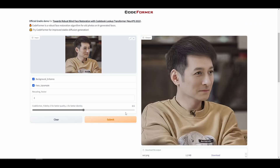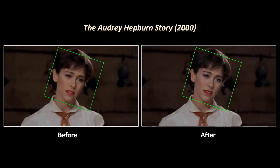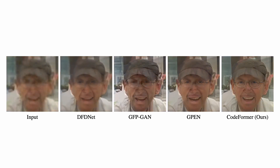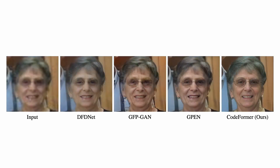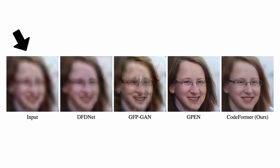And that is where CodeFormer comes in. Created by the folks at SLAB, Nanyang Technology University, this is a free online AI tool that allows creators to restore human faces in an image or video footage with high-quality details. Unlike other methods, blind face restoration is a highly ill-posed problem that often requires auxiliary guidance to improve the mapping from degraded inputs to desired outputs. This is a transformer-based prediction network which models global composition and context of low-quality faces for code prediction, enabling the discovery of natural faces that closely approximate the target faces even when the input is severely degraded.